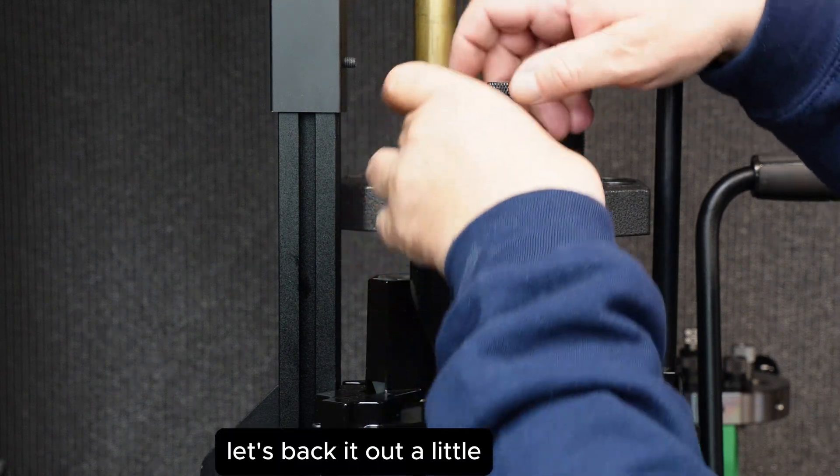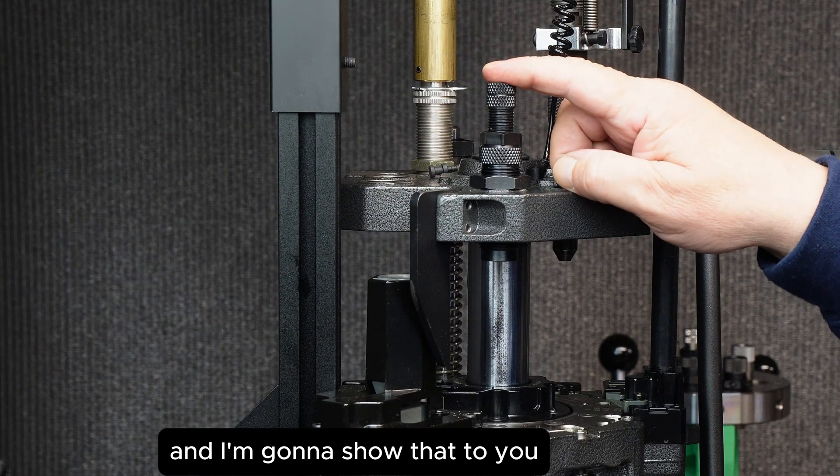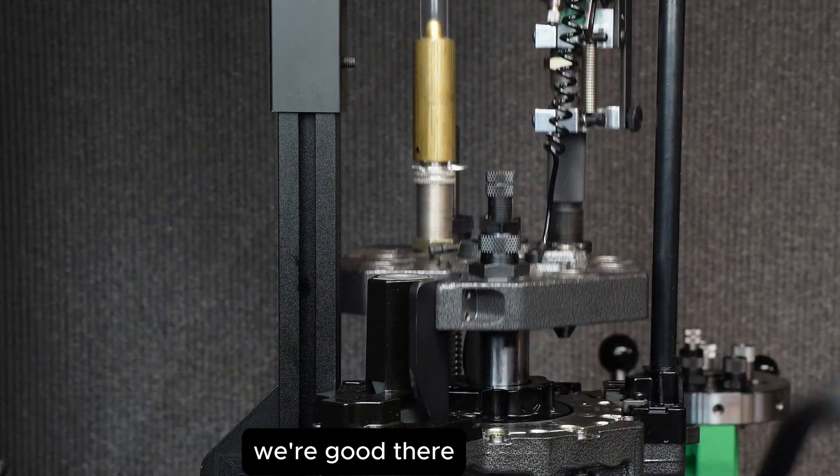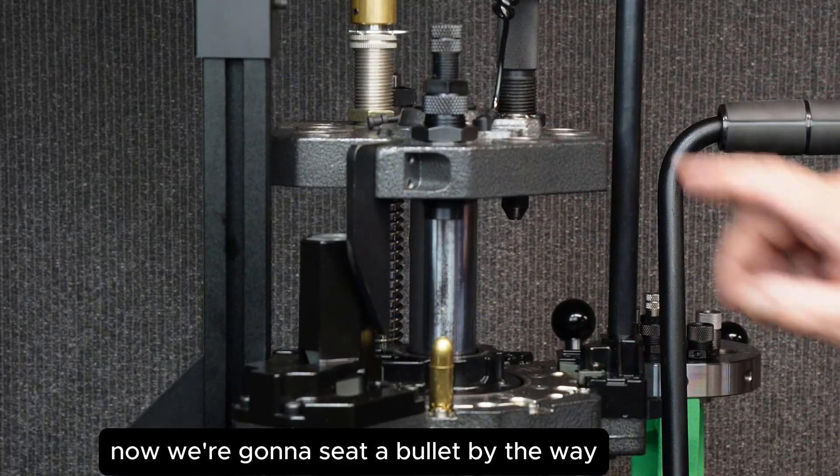Now let's back it out a little. Your adjusting is done from here and I'm going to show that to you. Let's get a look at this. Now we're going to seat the bullet with a bullet dropper that'll seat just fine.